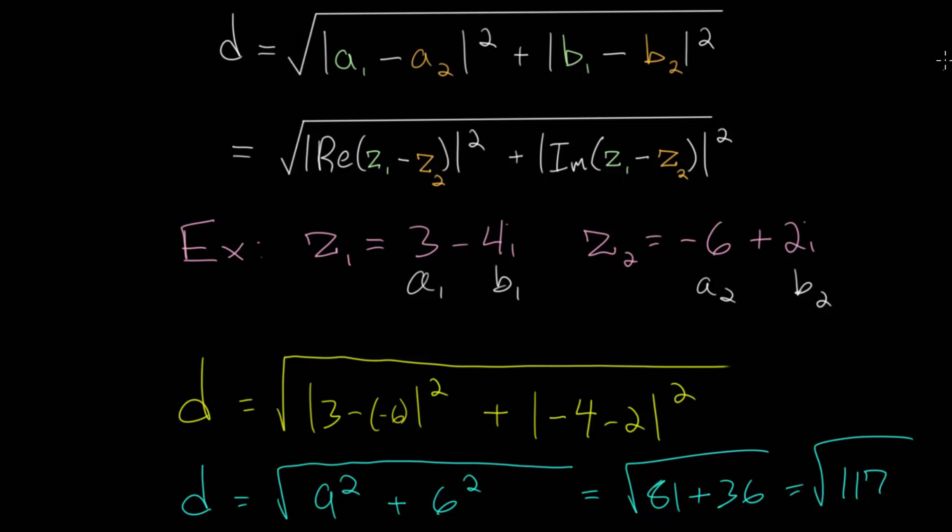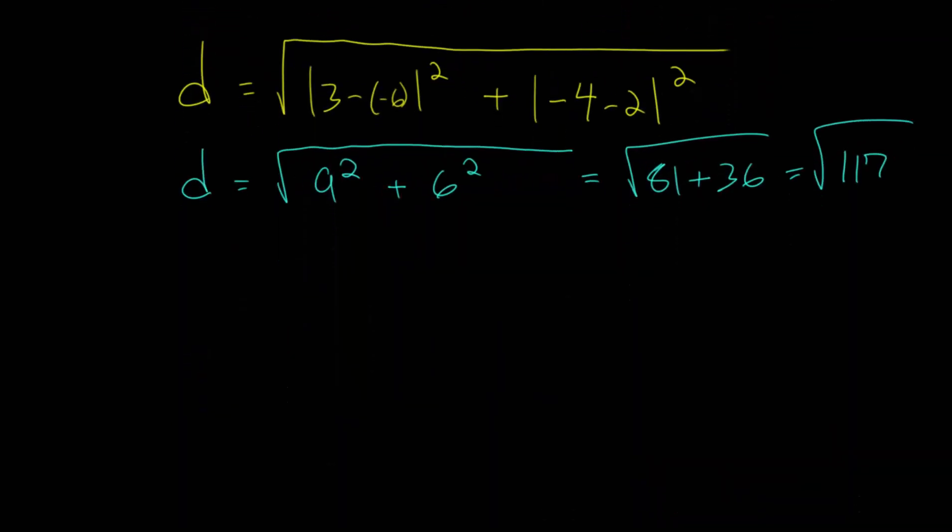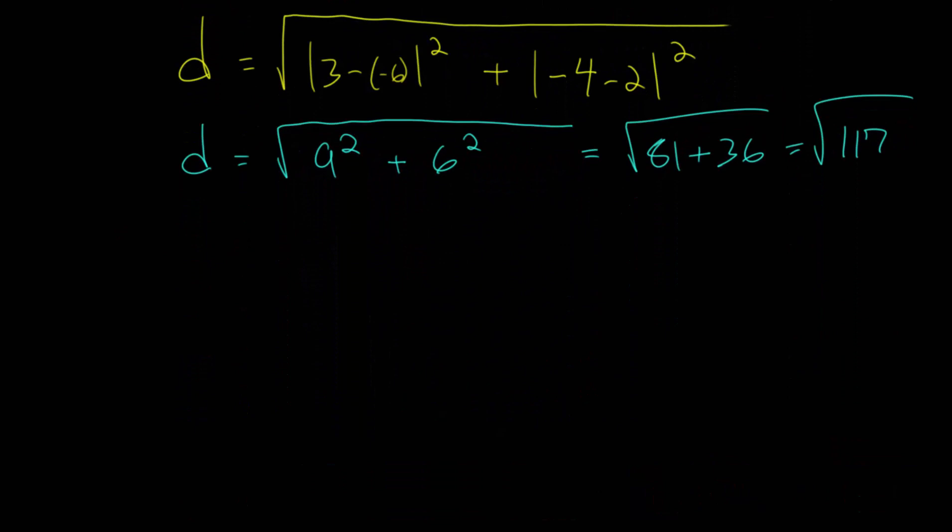And 117, or the square root of 117, can be simplified. So if we make a tree with 117, it is divisible by 3. And 3 goes into this 39 times. And 39 is also divisible by 3, goes into that 13 times. So 117 is really 3 squared multiplied by 13.